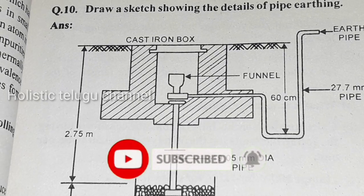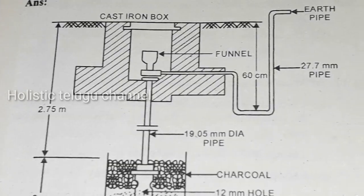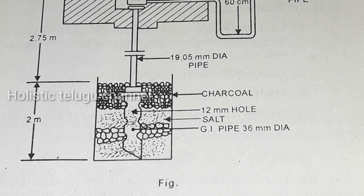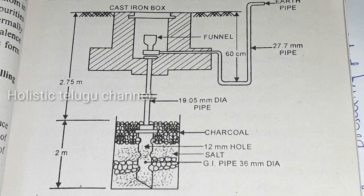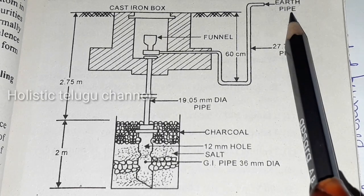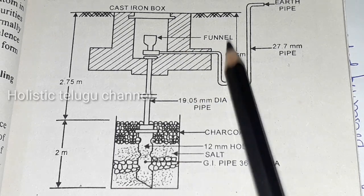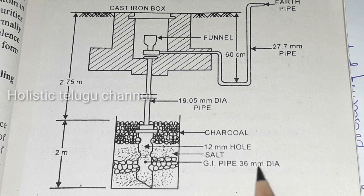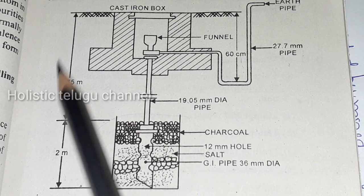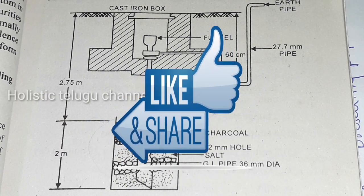Next question: draw the sketch of pipe earthing. In the pipe earthing diagram: a cast iron box is placed at the surface, followed by an earth pipe. Key dimensions include a 60 mm distance, 19.05 mm, charcoal, a 12 mm hole with salt, a GI pipe of 36 mm diameter extending 2 meters deep, and an overall depth of 2.75 meters. Students should be able to draw and label the pipe earthing diagram.